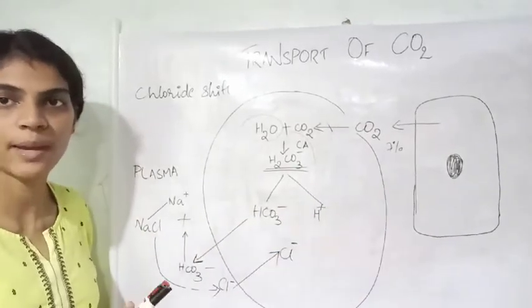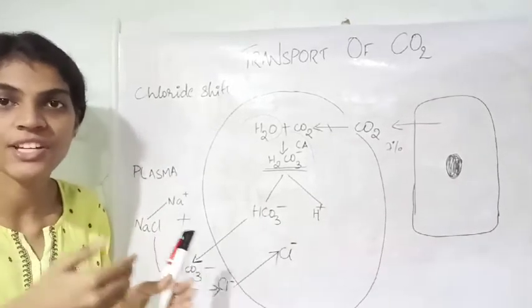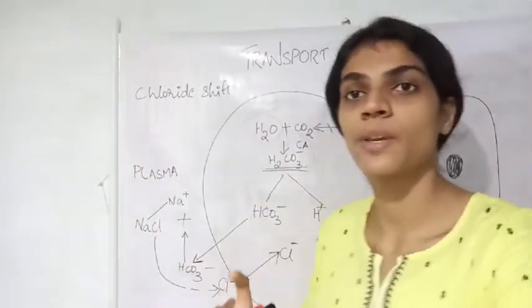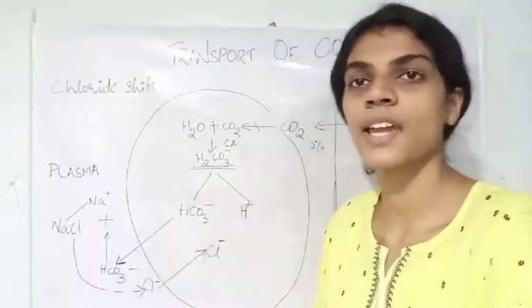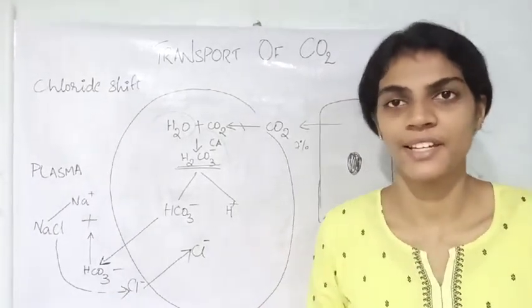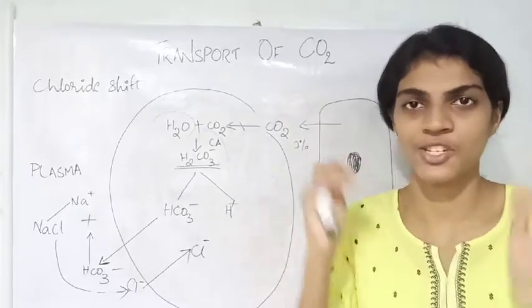And what happens when the blood reaches the lungs? The carbon dioxide has to be again obtained in its gaseous form. The final aim is that the carbon dioxide has to be eliminated through the respiratory tract.